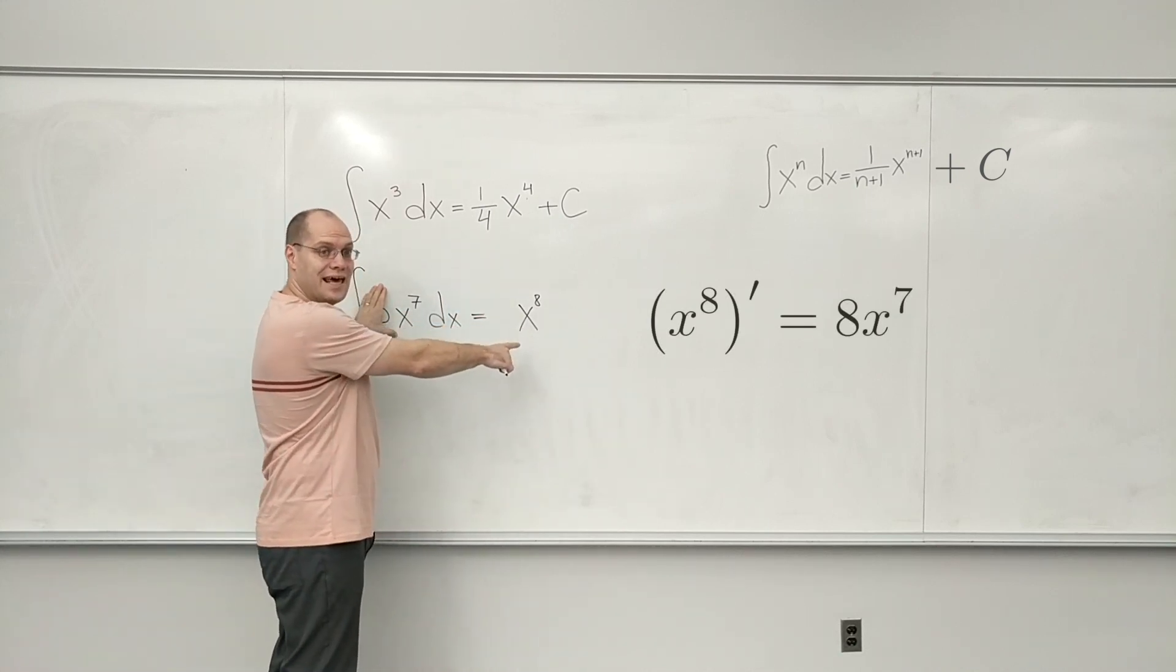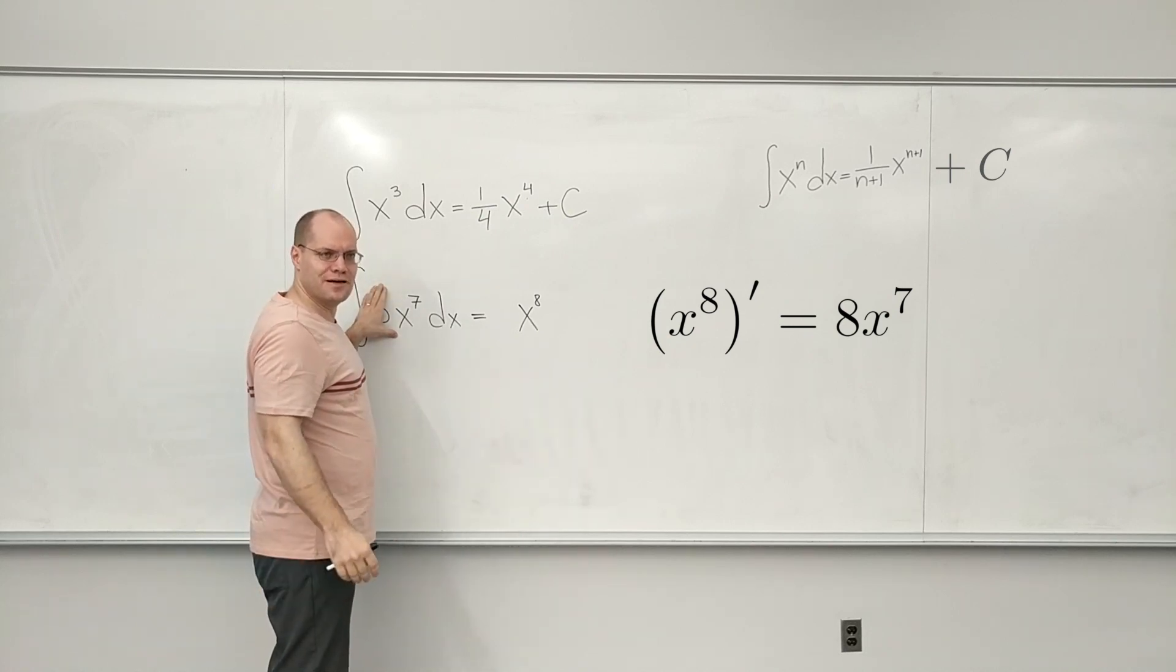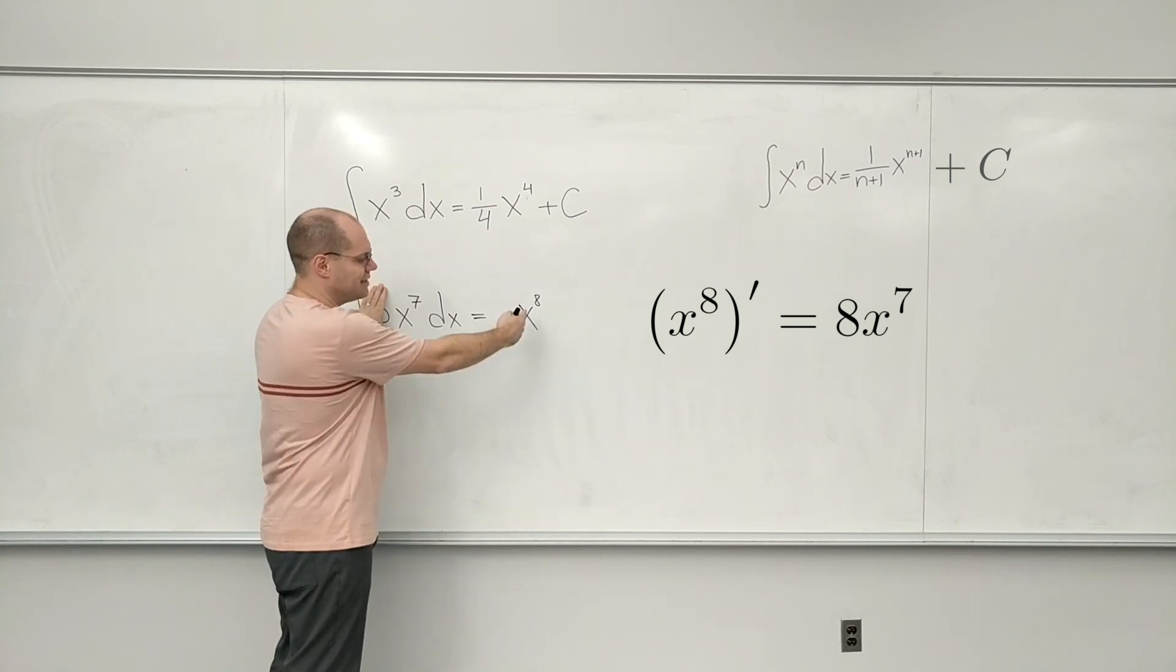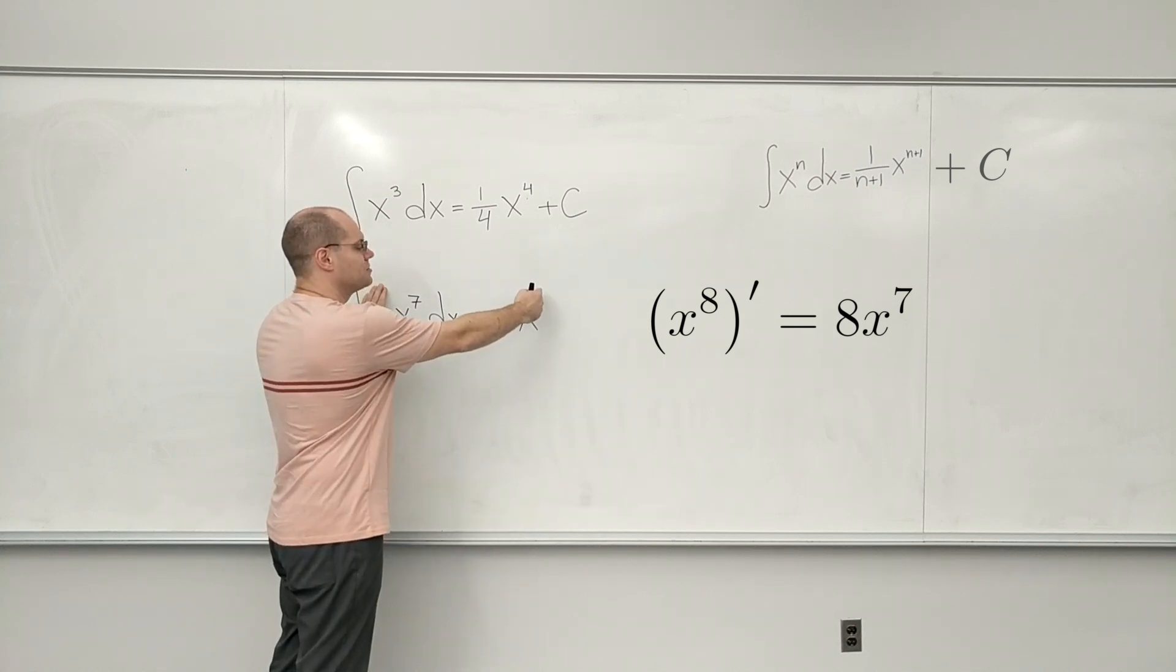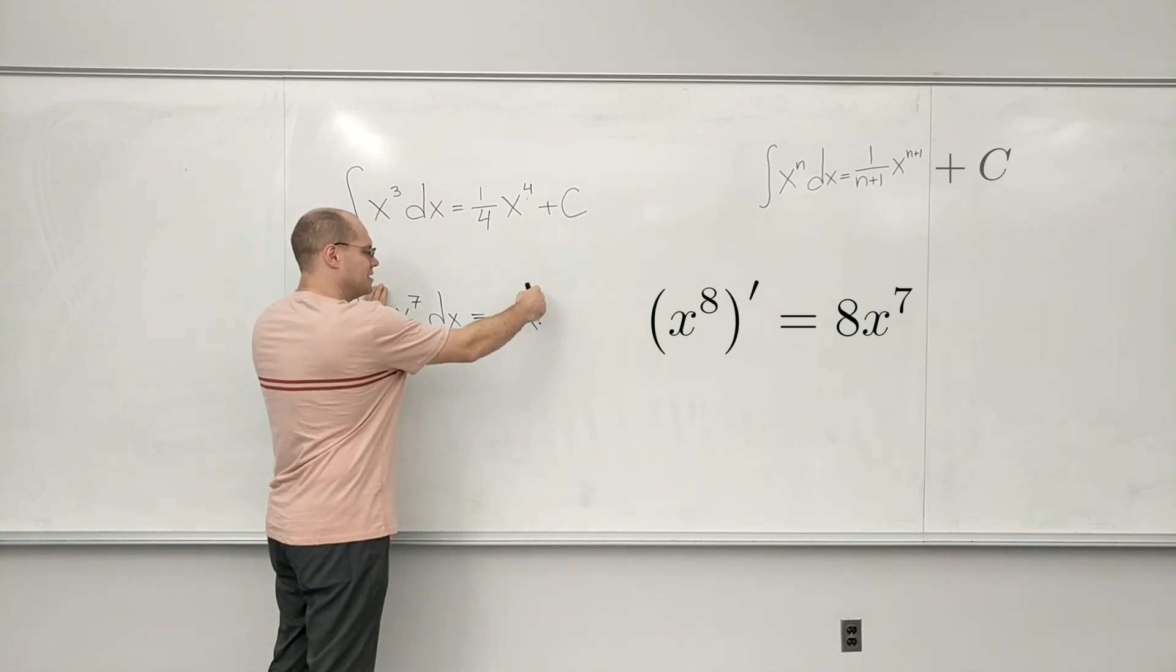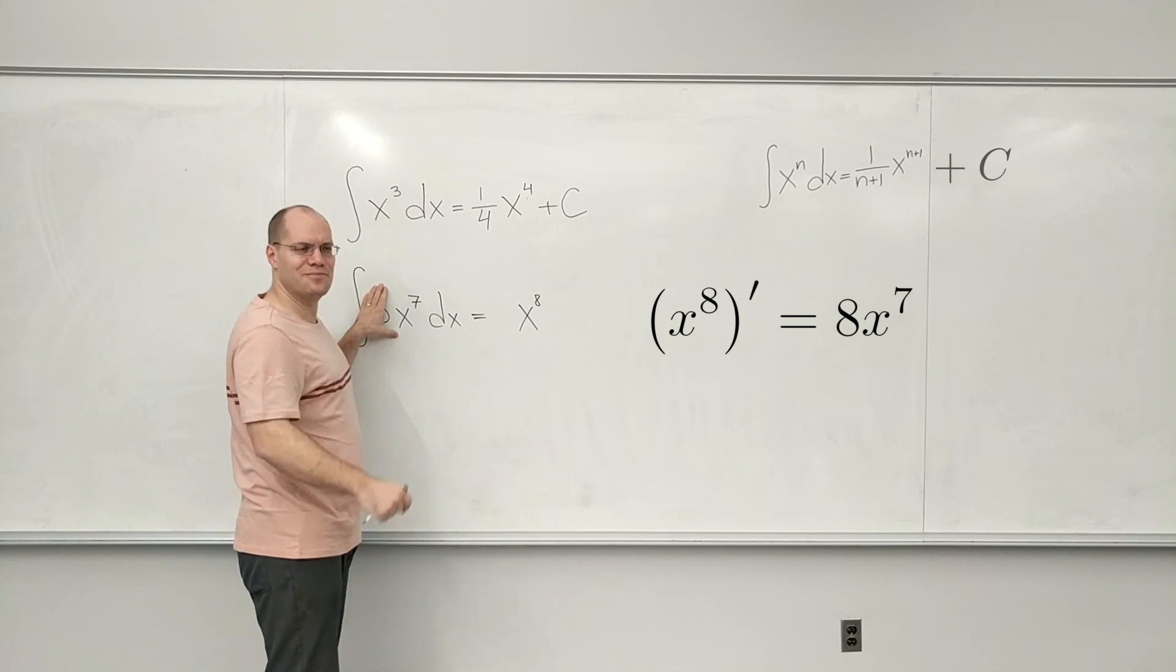What's the derivative of this? Well, it's 8 times x to the 7th. That's burned into my brain - that taking the derivative of a power like this requires bringing the exponent down and reducing it by 1. So 8 comes down and becomes 7. That's just burned into my brain. I see that automatically.